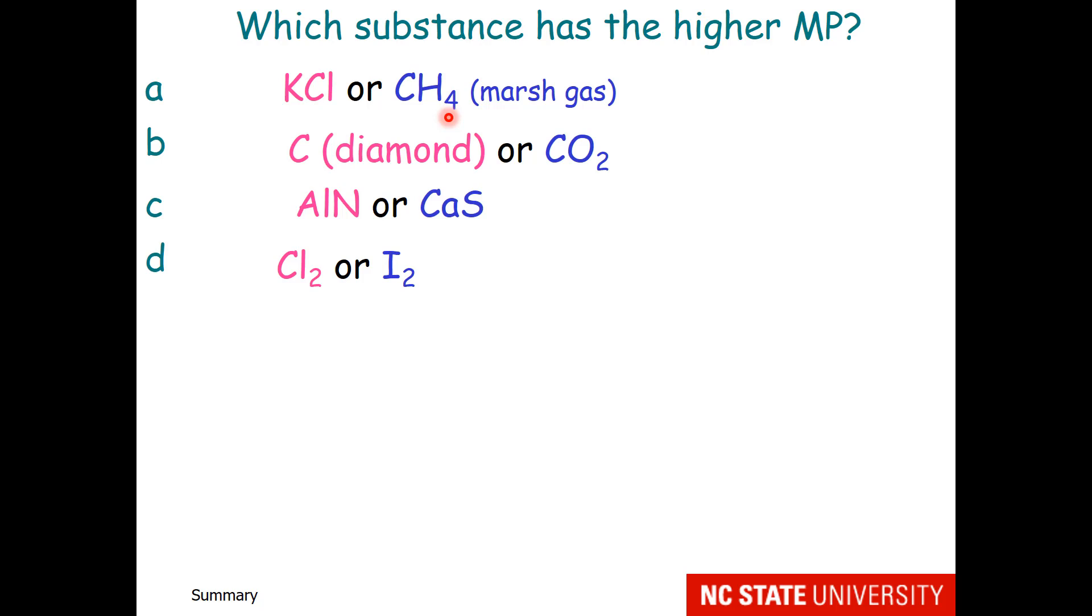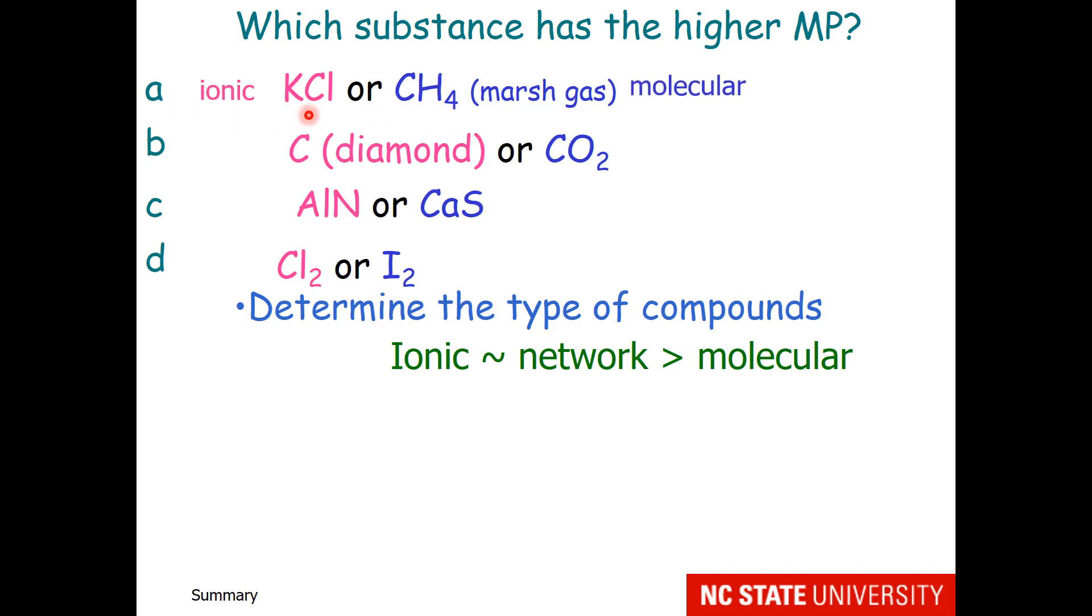Let's go through the analysis of material type. If we determine the type of compounds, ionic and network covalent compounds will have higher interaction energy and melting point than molecular compounds. Potassium chloride is an ionic solid. Methane is a molecular material.